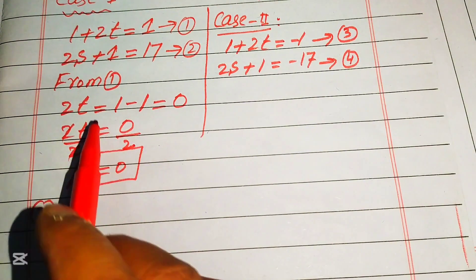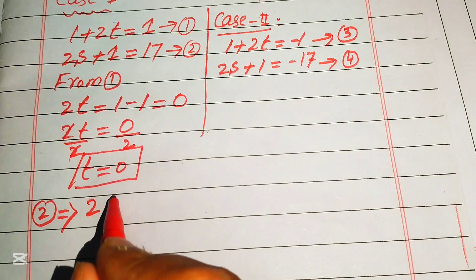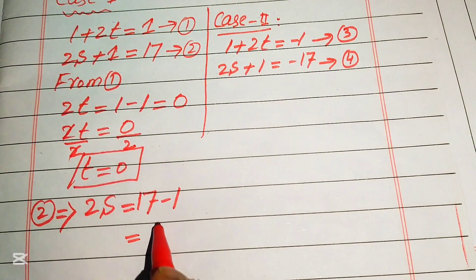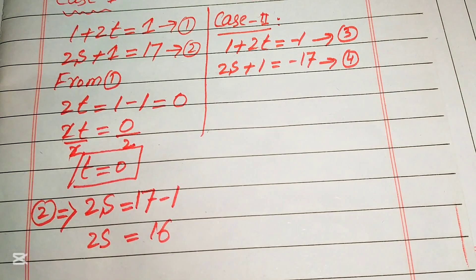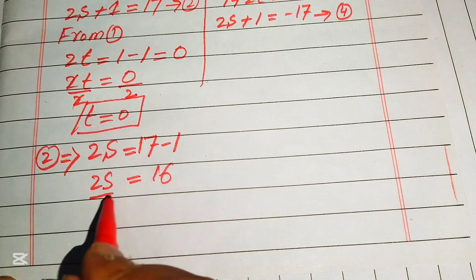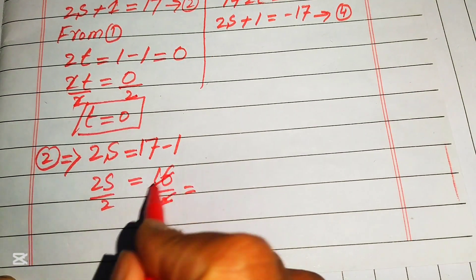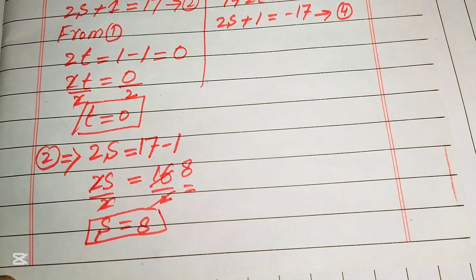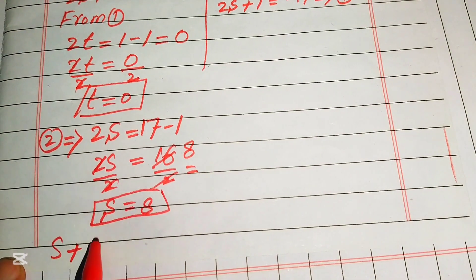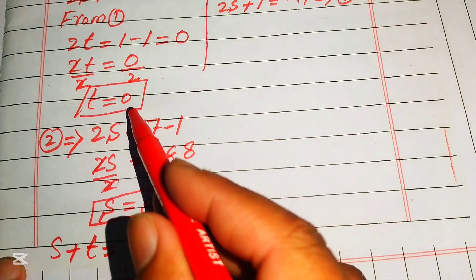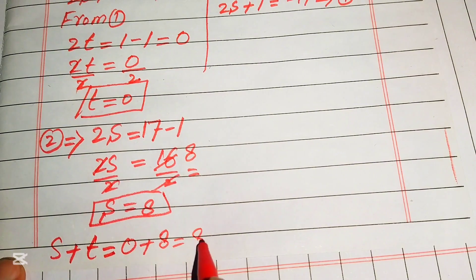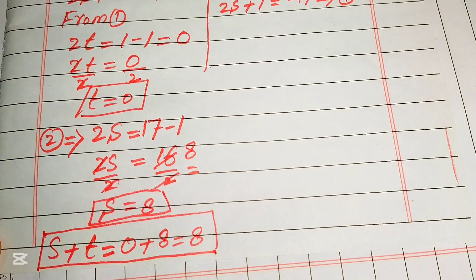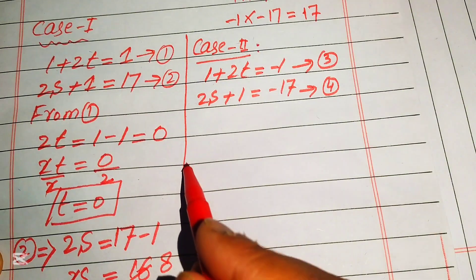From Equation 2: 2s plus 1 equals 17. Moving the 1 gives 2s equals 17 minus 1 equals 16. Dividing by 2, we get s equals 8. Therefore s plus t equals 8 plus 0 equals 8. This is the value of s plus t from Case 1.